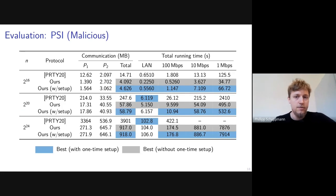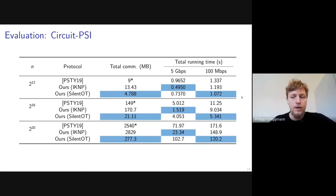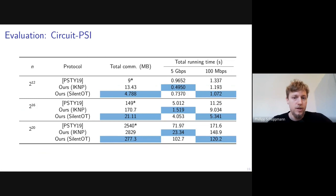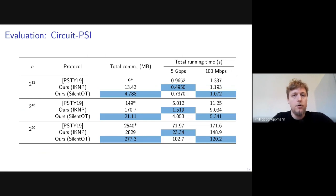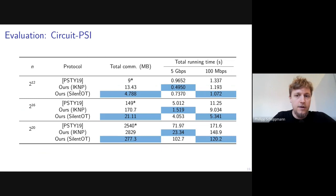In the malicious setting, a similar picture emerges: only in the LAN does the original Paxos PSI protocol slightly outperform ours, while in bandwidth-constrained settings ours is faster. For circuit PSI, we have two implementation choices based on the generic circuit-based MPC protocol using GMW. We can use either standard IKNP OT extension or the more communication-efficient Silent OT. In bandwidth-constrained settings, Silent OT outperforms IKNP. Both outperform the original circuit PSI protocol in communication, and at least one outperforms it in total running time.